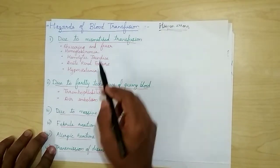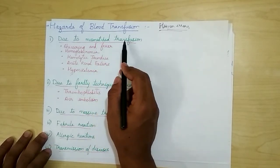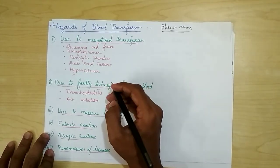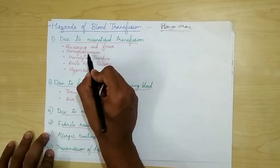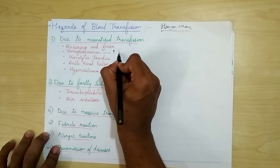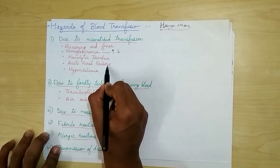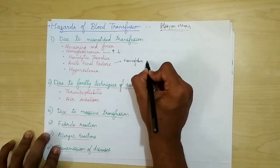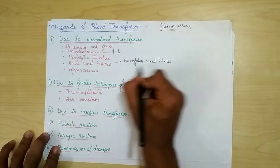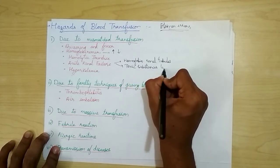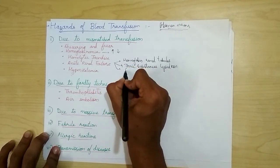Since the donor plasma is highly diluted, the agglutinins of donor plasma cannot damage the red cells of the recipient, so minor cross matching is not as critical — however it is done to fully assess the blood transfusion. Hazards of blood transfusion are mostly caused by human errors. The first hazard is mismatch transfusion, causing severe agglutination and hemolysis. Complications include shivering and fever, hemoglobinemia due to increased red cell destruction, hemolytic jaundice, acute renal failure caused by hemoglobin blocking renal tubules, toxic substances from lysed red cells, and circulatory shock.